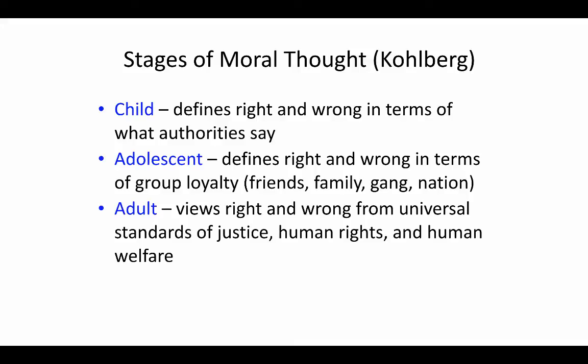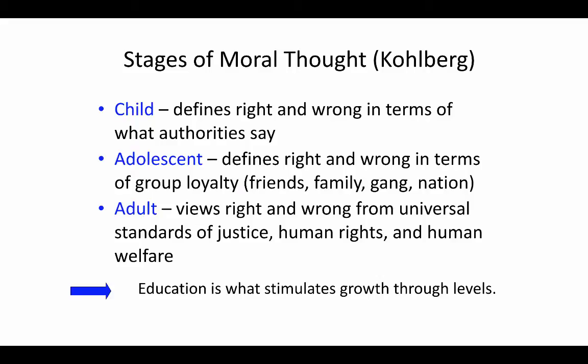This slide shows the stages of moral thought as envisioned by Dr. Kohlberg in the 1950s. A child defines right and wrong in terms of what authorities say. An adolescent defines right and wrong in terms of group loyalty — from friends, family, a gang, or the nation. Whereas an adult is expected to view right and wrong from universal standards of justice, human rights, and human welfare. Kohlberg believes that education is what stimulates moral growth through these different stages.